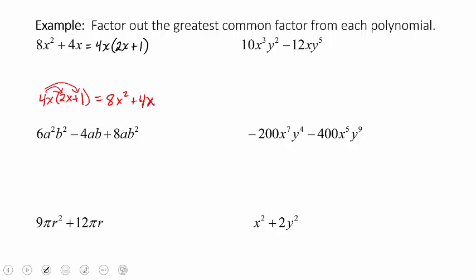Now we have 10x³y² minus 12xy⁵, with both numbers and two different variables. First, find the GCF of the numbers: 10 and 12. They're both even, so 2 goes into both. The only other factor of 10 is 5, and 5 doesn't divide 12. So 2 is our greatest common factor among the numbers.